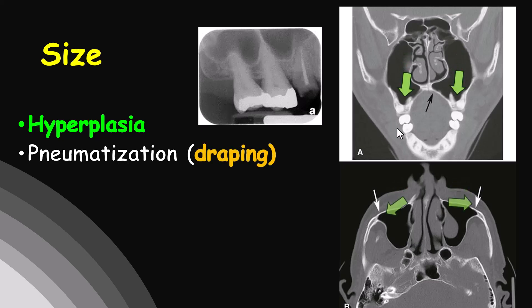A hyperplastic sinus is due to pneumatization of the sinus into the body of the maxillary bone. The total sinus can extend laterally into the zygomatic process and inferiorly into the alveolar process. Pneumatization into the alveolar process between the teeth gives a 'dropping' appearance, which can be seen in the periapical view as a thin, well-defined radiopaque line with greater pneumatization.